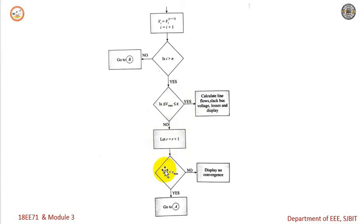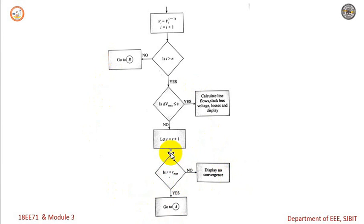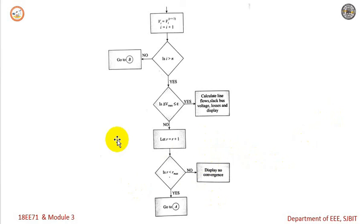Continue iterating while r is less than r max. We set the maximum number of iterations as r max. If r is less than r max, go back to the start and carry out the next iteration. If no, display the result as no convergence, because once the maximum number of iterations is reached and the desired value is still not obtained, the result is displayed as no convergence. This is the flowchart of the load flow solution using the Gauss-Seidel iterative method.